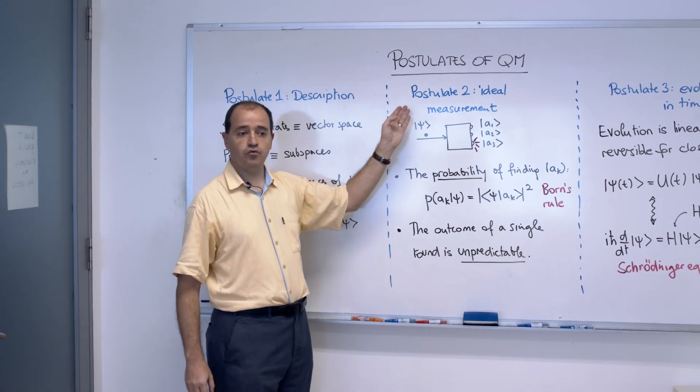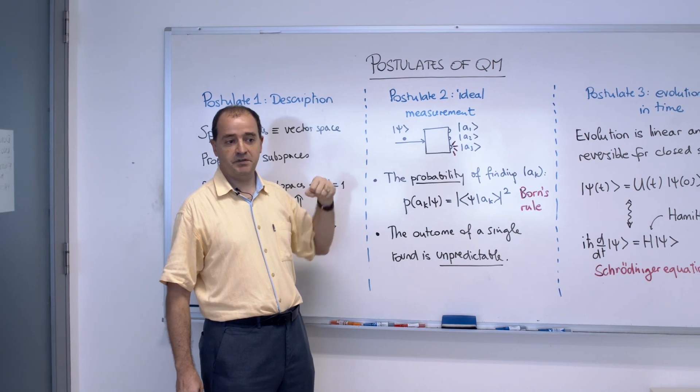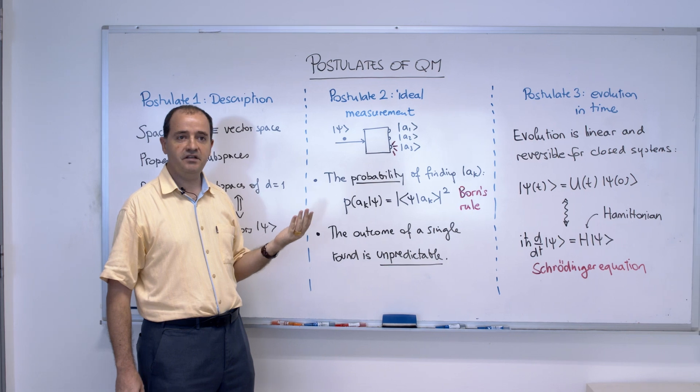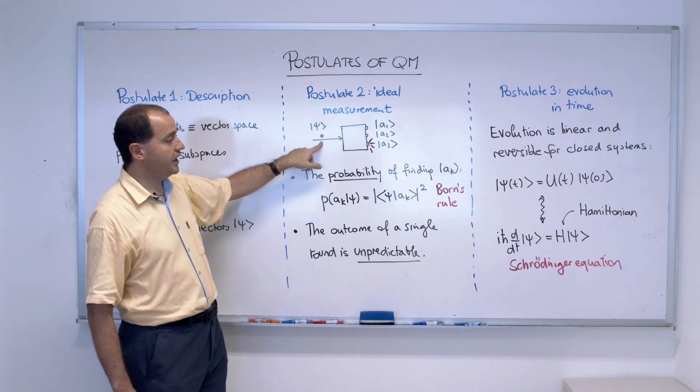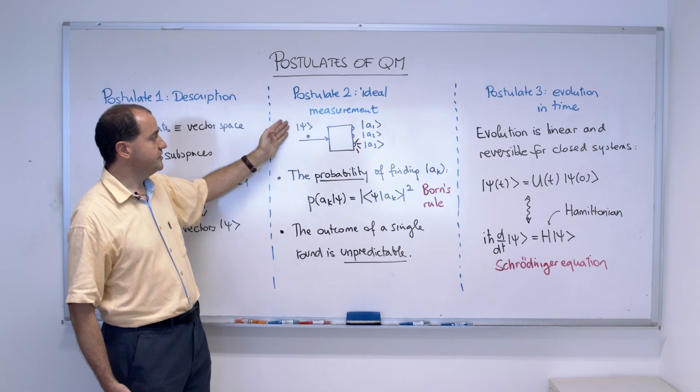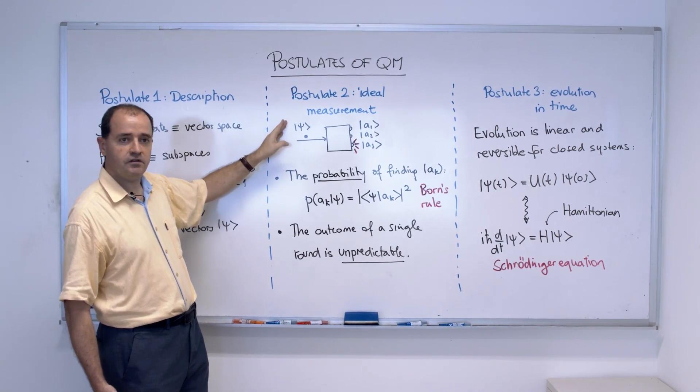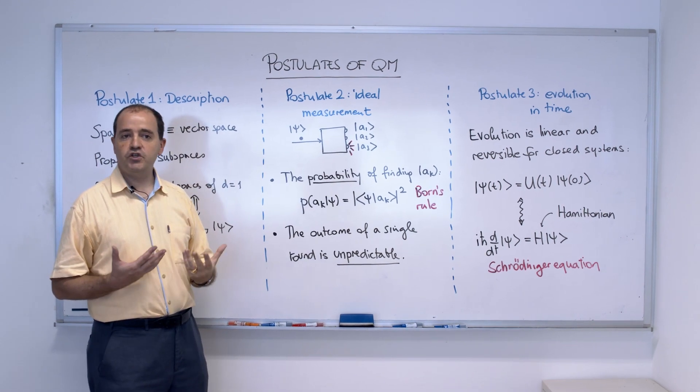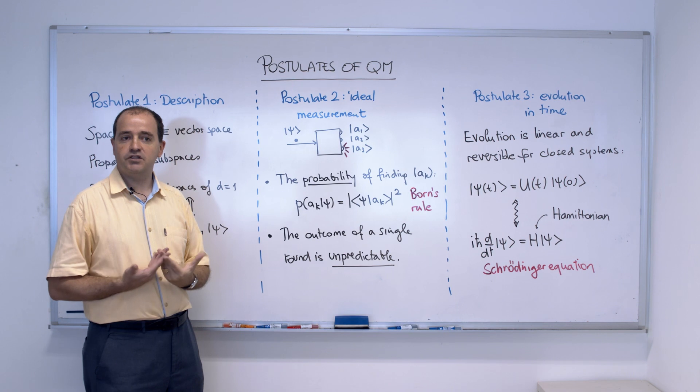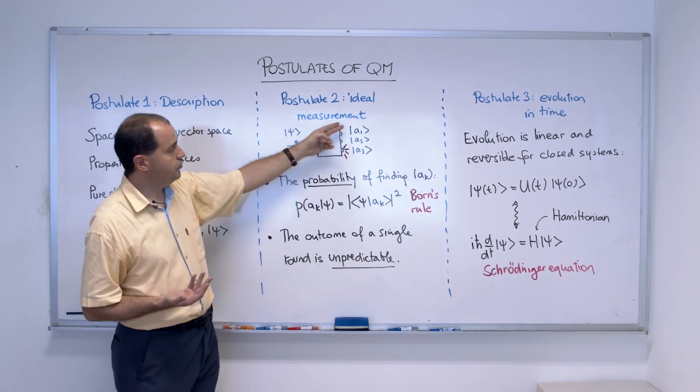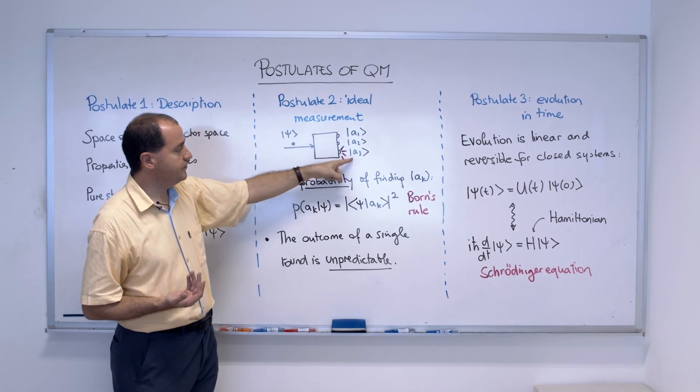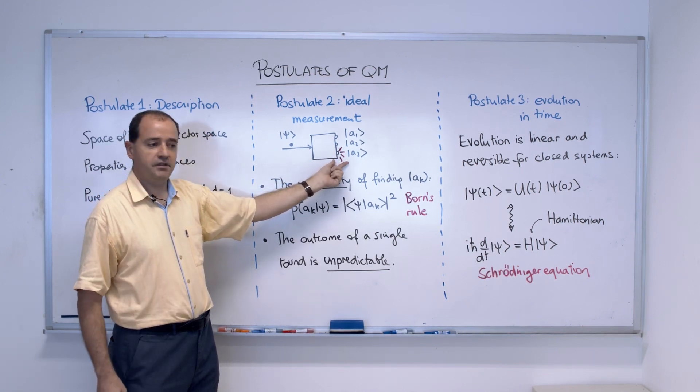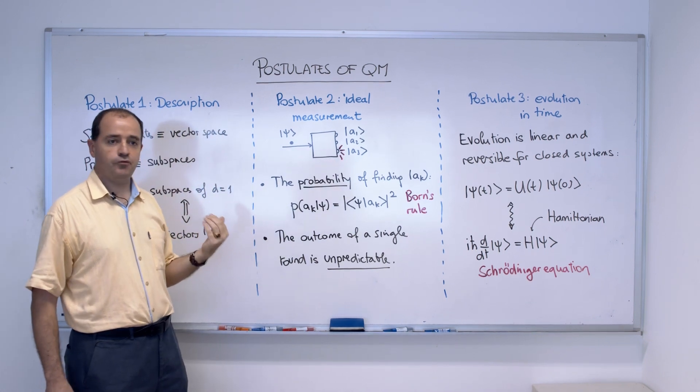The second postulate has something to do with measurement, specifically with ideal measurements. We shall describe carefully in the lectures what ideal means. But here is a model of a measurement. I come with a particle that has a given state. Now we know a state is a vector. And I want to make a measurement. Making a measurement which means to find in which of a set of states the particle is found. For instance, here there are possible states a1, a2 and a3. And this measurement makes a click for the state a3.